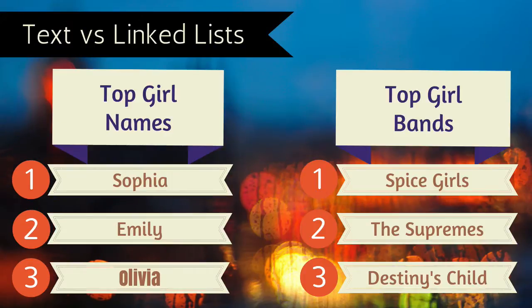Listly is actually a crowdsourcing platform that lets you gather information, collect feedback, and collect suggestions for your list. Here we have two examples: a girls names list and a top bands list. We could crowdsource both of those on Listly. One would be fine as a text list; the other would be much more useful if we link to the band's website or to a video.